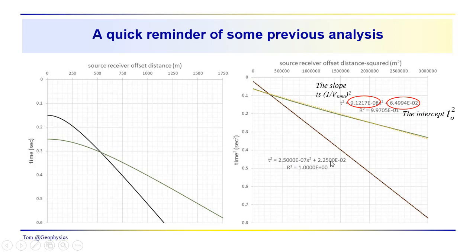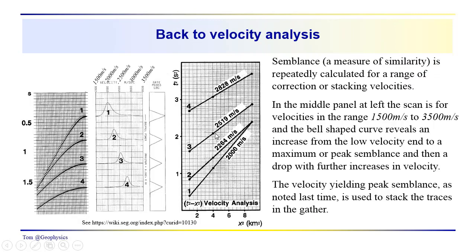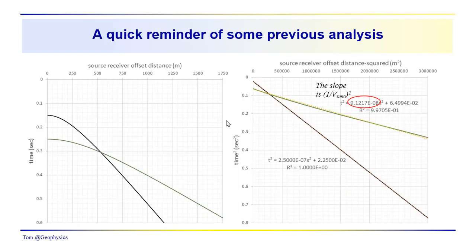And this would be its T0 squared. So we were just looking at that in this diagram here, just looking at the square root of the reciprocal slope to get the velocities.